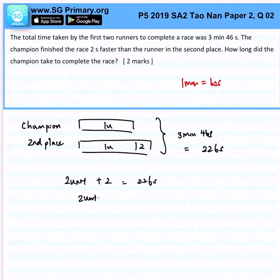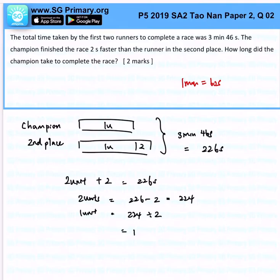2 units will be 226 minus 2, which is 224. 1 unit would be 224 divided by 2, which gives us 112 seconds. Converting to minutes, that will be 1 minute and 52 seconds.